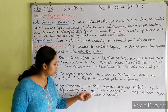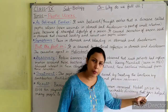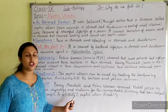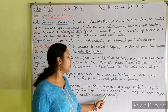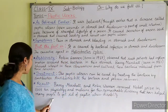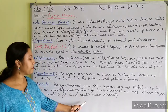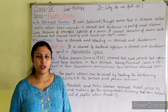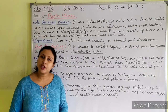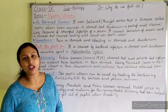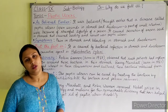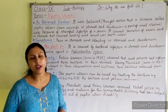Barry Marshall and Robin Warren received the Nobel Prize in the year 2005 for Physiology and Medicine for this remarkable discovery, which has helped many people to get rid of peptic ulcers. Many patients have been cured who suffered from peptic ulcers.